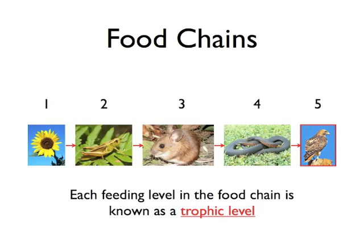When we examine the food chains of an ecosystem, we want to see how many feeding levels there are so that we can better understand how energy is transferred through the system. Each feeding level in the food chain is known as a trophic level. As you can see in this food chain, there are five trophic levels consisting of a producer, a primary consumer, a secondary consumer, a tertiary consumer, and a quaternary consumer.